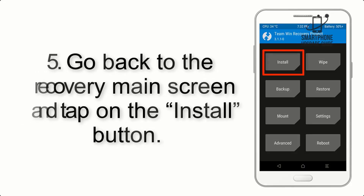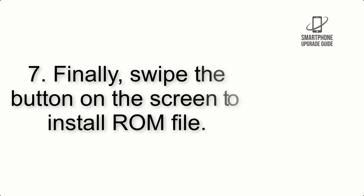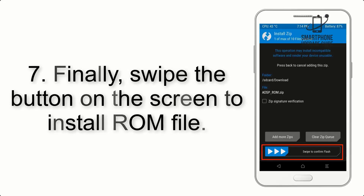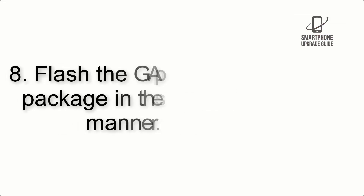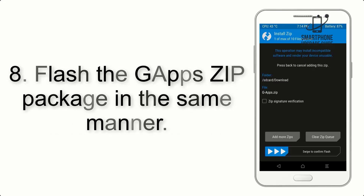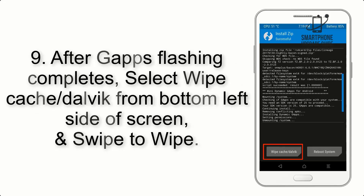Step 5: Go back to the recovery main screen and tap on the Install button. Step 6: Navigate to the storage and select the ROM zip file. Step 7: Swipe the button on the screen to install the ROM file.